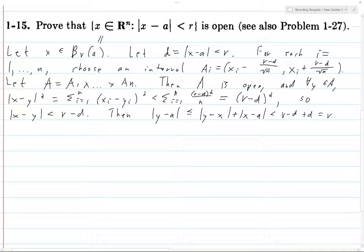So the distance |y-a| is strictly less than r. Thus, this implies that y is in B_r(a). And so x is contained in the open set A, which is a subset of B_r(a).